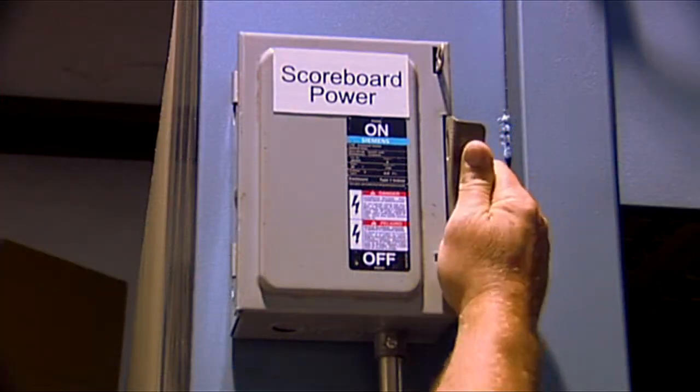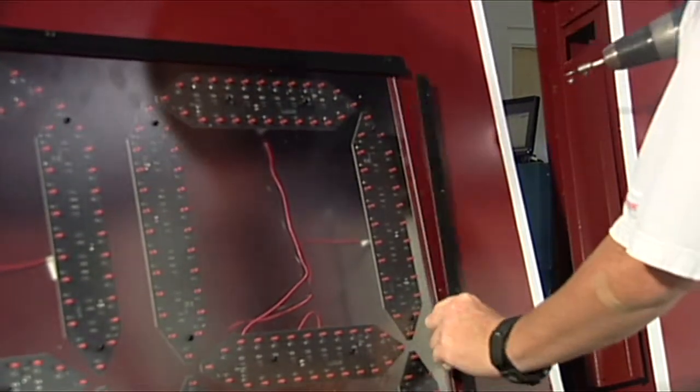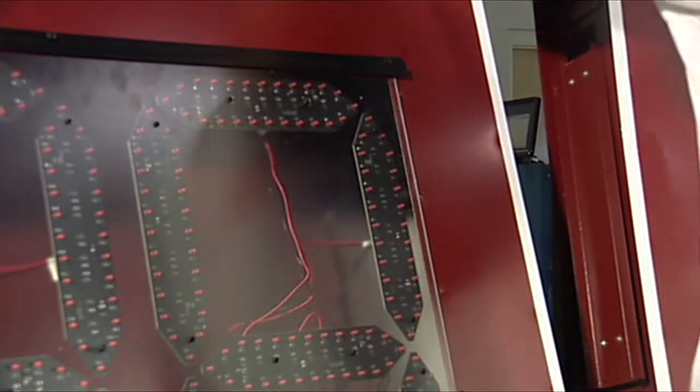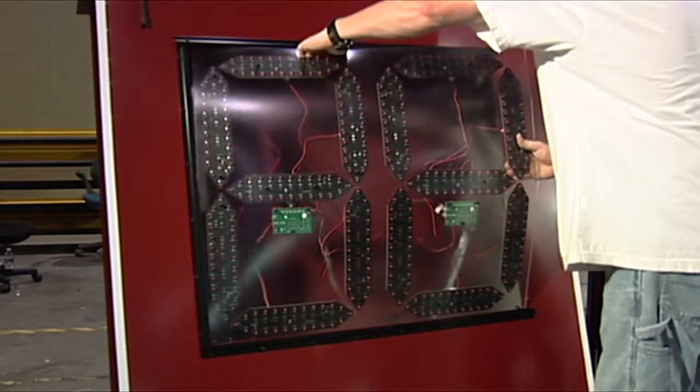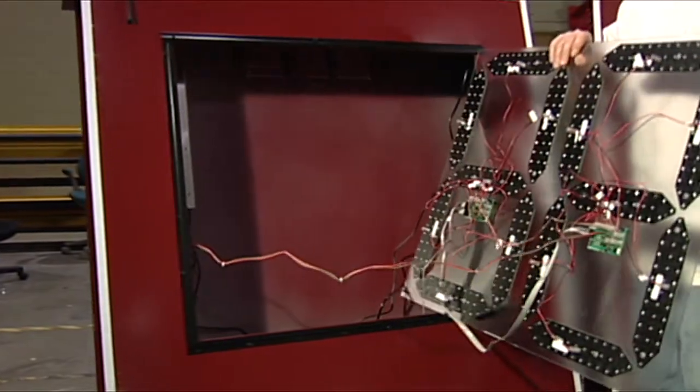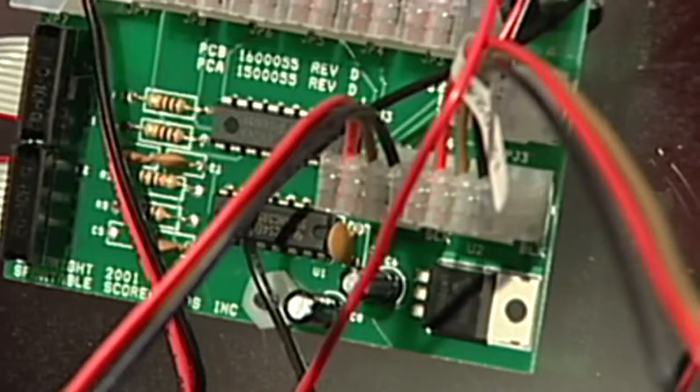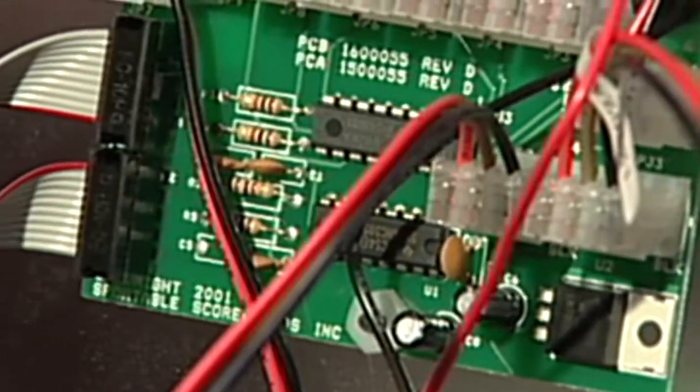Begin by turning off the power to the scoreboard. Use the drill and a quarter inch nut driver to remove one edge of the Z rail holding the digit to the scoreboard. Take a picture or draw a diagram of how the two three wire power cables and both ribbon cables are attached to the driver.